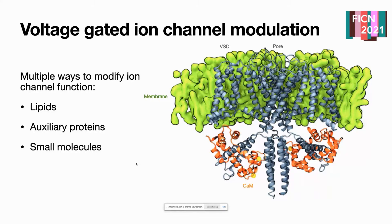There are many ways that ion channels can be modulated — one through post-translational modification, one related to where they are expressed. Today I want to focus on three types of modulations: modulation by the lipids in the membrane, by auxiliary proteins like calmodulin, and by small molecules, which I will touch upon later. These channels are a tetrameric assembly made of two essential transmembrane domains: the voltage sensor domain, made up by four helices, and the pore domain, made by the tetrameric assembly of two transmembrane segments, plus quite big intracellular domains.